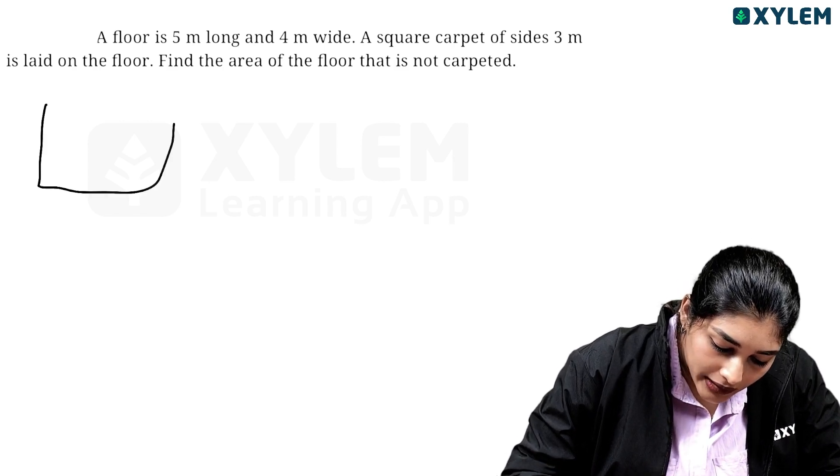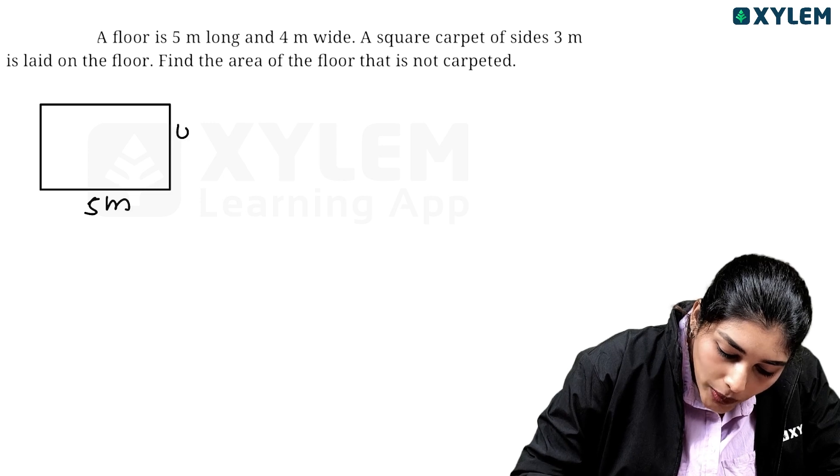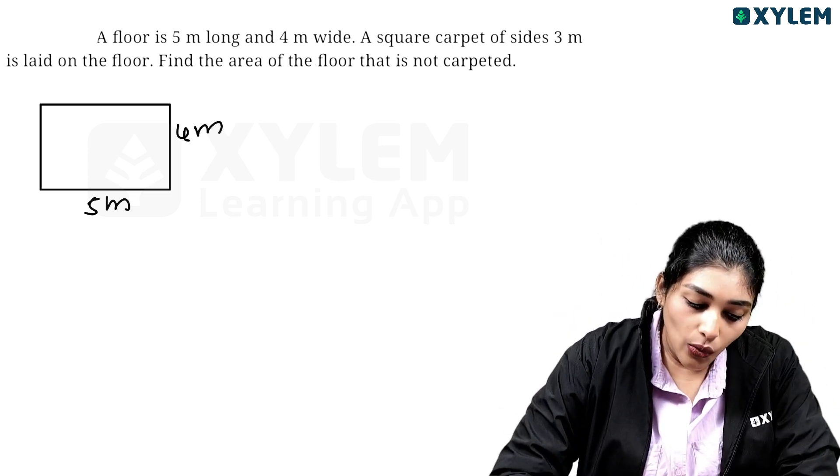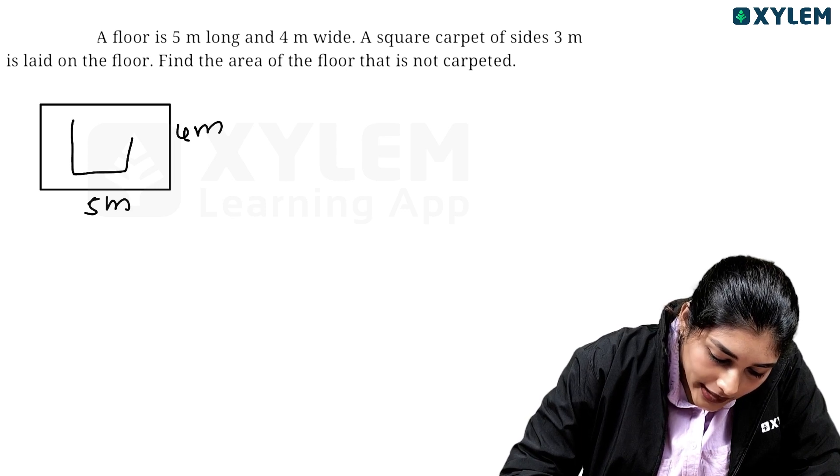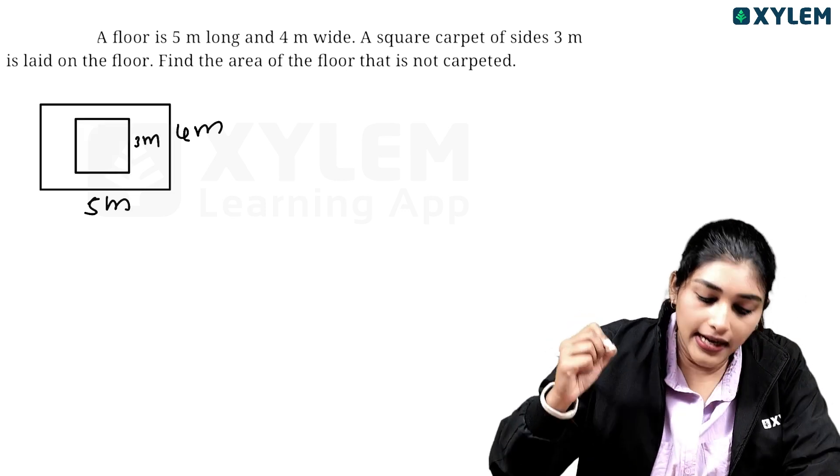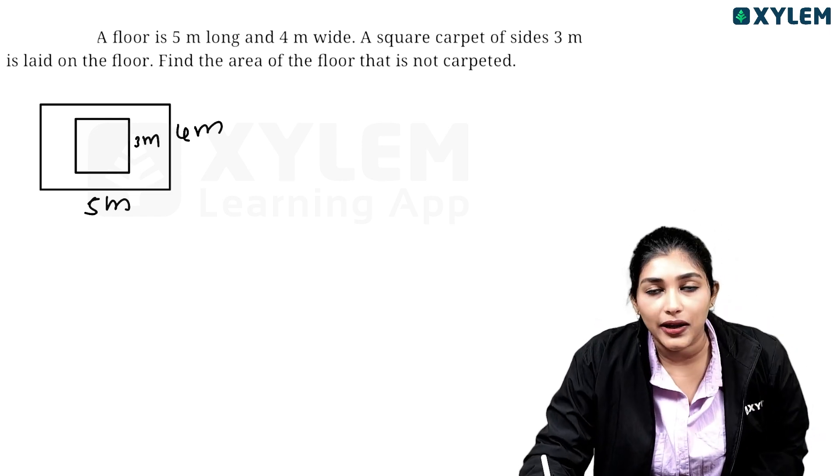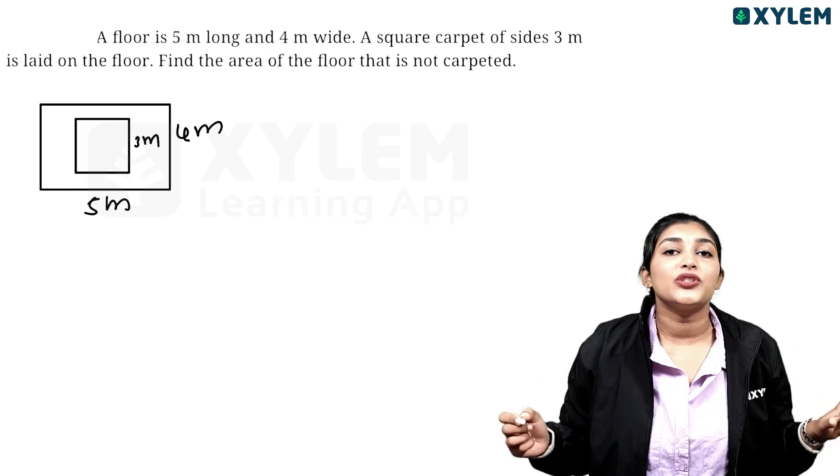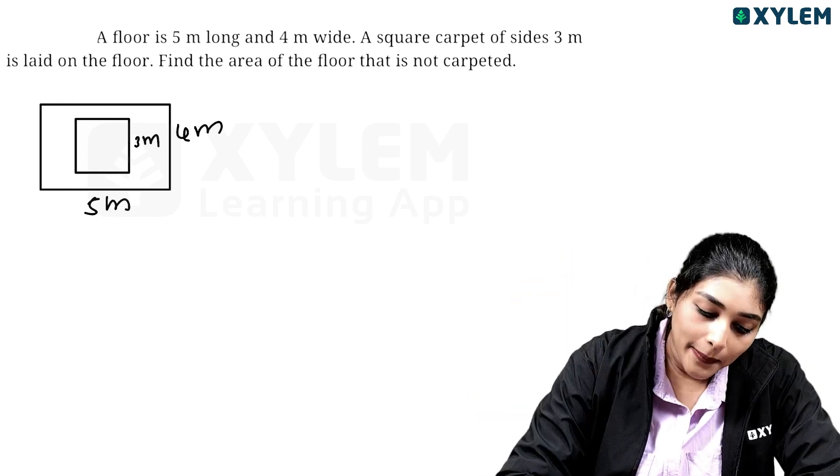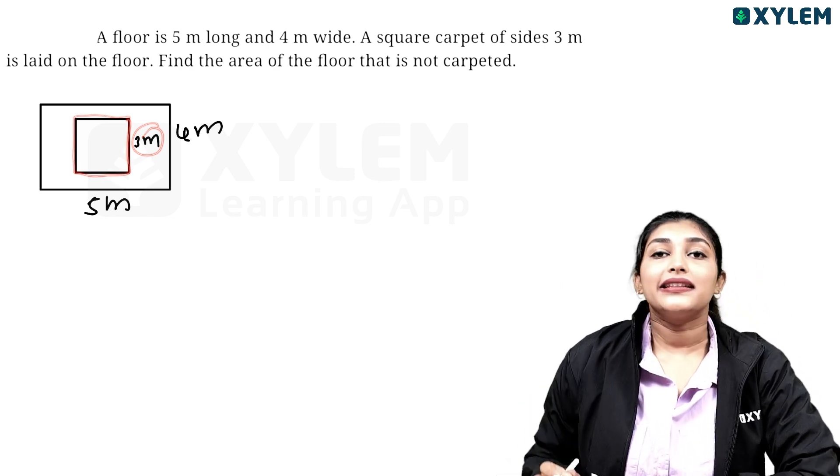This floor is 4m long and 4m wide. Side 3 is 3m. 3m on the side. There is square carpet. Those square parts are equal. There are square parts. 3m on the side.